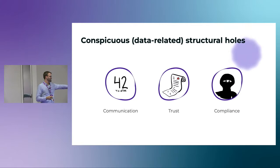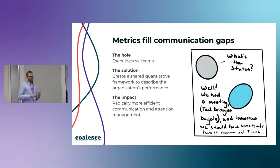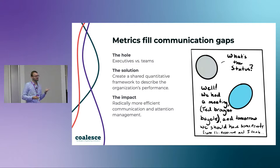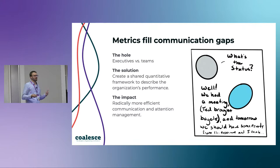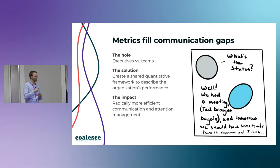I want to talk about three examples of structural holes that data teams tend to fill — with a past, present, and future theme: filling communication gaps, filling trust gaps, and filling compliance gaps. Metrics are one of the premier things data teams do — probably the only thing that unites all of us across organizations. But what metrics actually do from an organizational perspective is make it very easy for executives to talk to people in the weeds. In eight words I can communicate a whole lot: 'Product green. Sales green. Marketing green. HR red.' Everyone in this room, if we have a 15-minute meeting, we know what we want to talk about — HR and why it's red. That's the role metrics fill: an efficient communication interface.